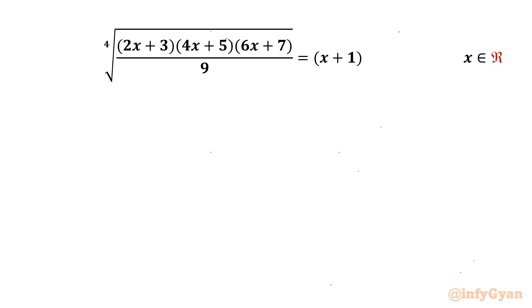Welcome back to Infigyan, my dear friends, in this very exciting video on Radical Equations. The given equation is the 4th root of (2x+3)(4x+5)(6x+7) over 9, equal to x+1, and we are going to calculate the real solutions.